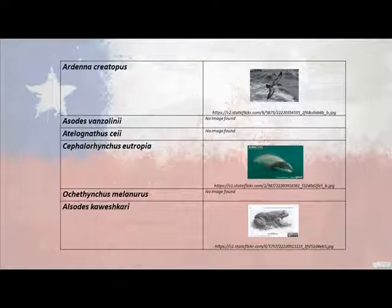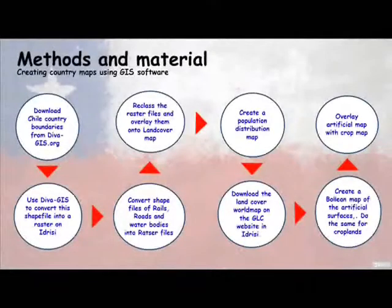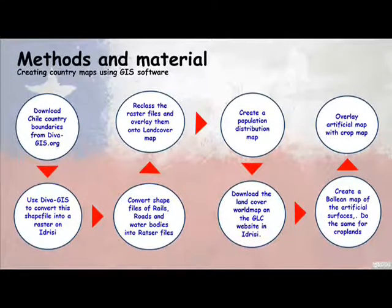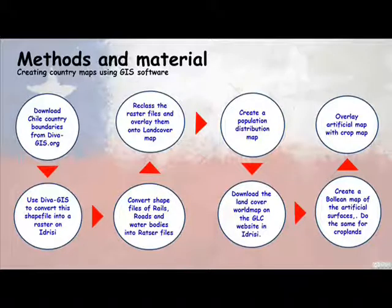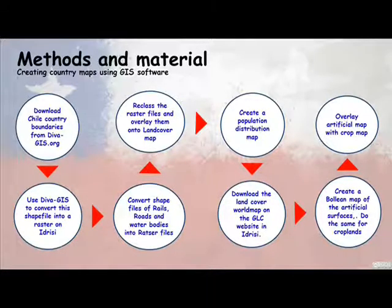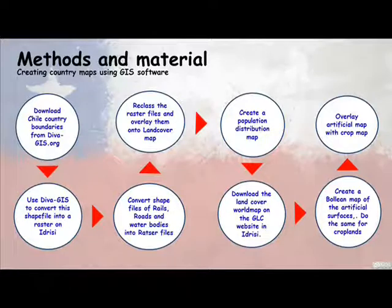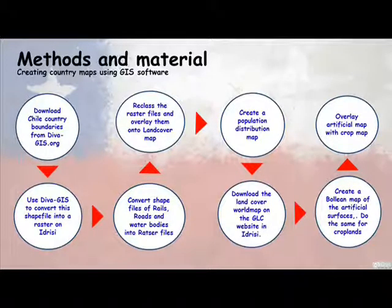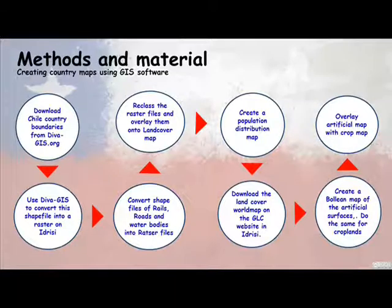Methods and Materials: Download Masked Land Cover, Population, Rails, Roads, Water Bodies, and admin shapefiles from Diva.org. Open Land Cover as a shapefile in DivaGIS application and export as a grid file into Idrisi32 as a raster file. Import shapefiles of rails, roads, and water bodies into Idrisi32 and convert to vector files, then convert these vector files into raster files. Reclass raster files of roads, rails, and water bodies, and overlay these reclassed raster files onto the rastered land cover file. This land cover map will be the final land use map of Chile.